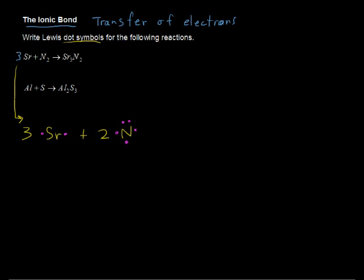3 strontiums plus 2 nitrogens, and the Lewis dot symbol for nitrogen is like so. We have either paired electrons or unpaired. You can see that they're either together or just sitting out by itself. You can have a total of 8 valence electrons, 2 on each side. Here we have 2 for strontium and 5 for nitrogen.